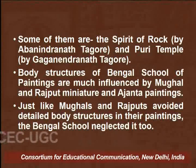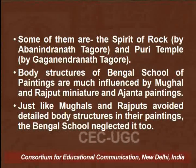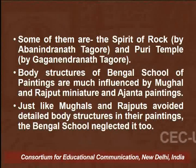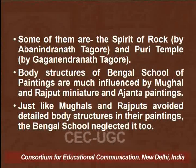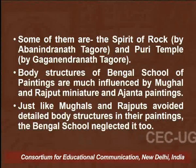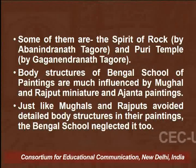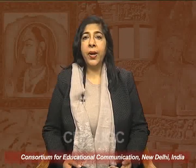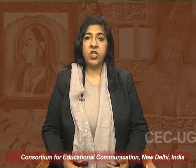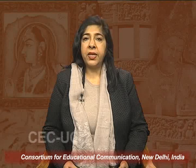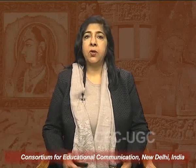Some examples are the Spirit of Rock by Abhanindranath Tagore and Puri Temple by Gaganendranath Tagore. The body structures of Bengal school paintings were very much influenced by Mughal and Rajput miniature and Ajanta paintings. Just like the Mughals and Rajputs avoided detailed body structures in their paintings, the Bengal school also started neglecting them. The facial expressions were more or less around sadness, shyness, or anger, which was quite visible in Bengal style paintings rather than paintings of happiness or gay abandon.